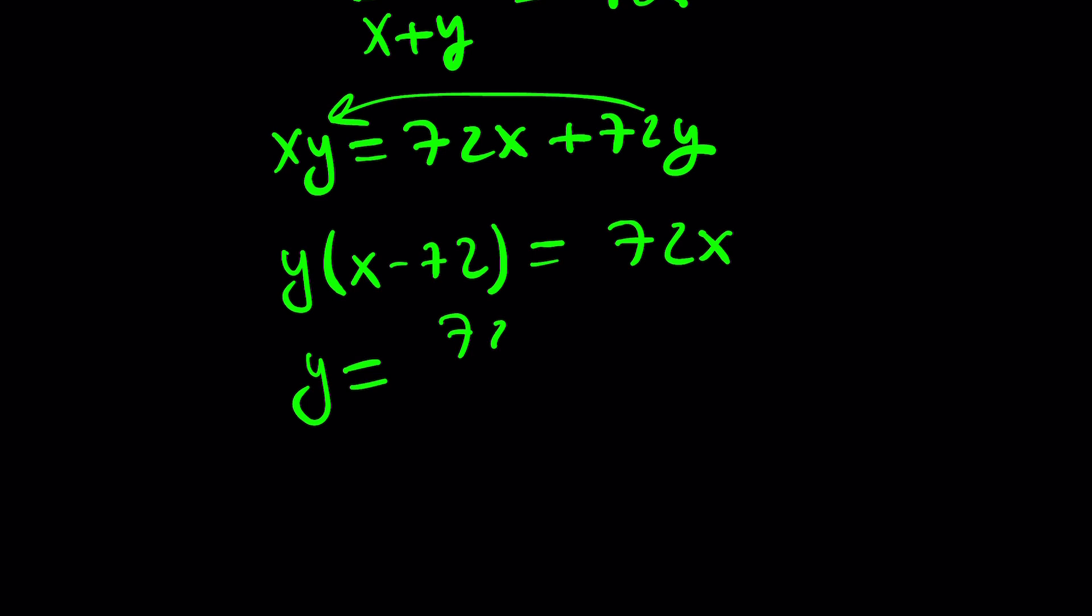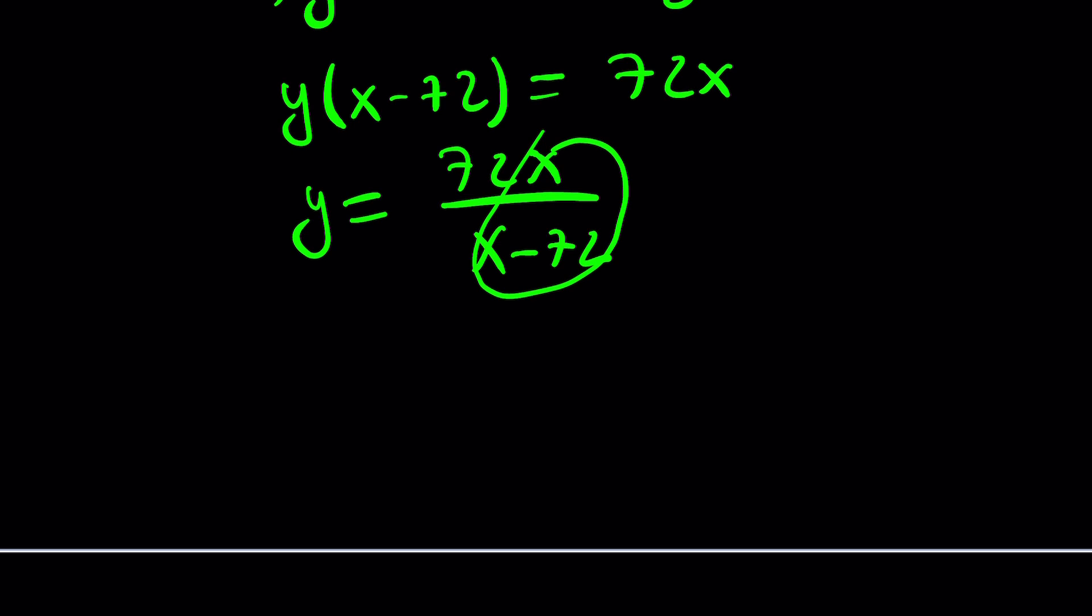Now, we can go ahead and isolate y here. But at this point, you kind of need to do a little bit of hocus-pocus. But I'll show you the trick, the mathematical trick. We want to make the numerator divisible by the denominator.